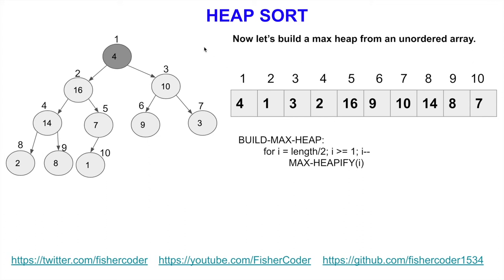Continuing to decrement i to 1, the element 4 is not in a valid position. We swap 4 with 16, but this is still not a valid heap, so we swap it down further, and again. At this point, we have a valid max heap. We've finished building a valid max heap from a randomly ordered array by following those two simple lines of pseudocode: start from the last element of the first half and call max heapify down to the first element.